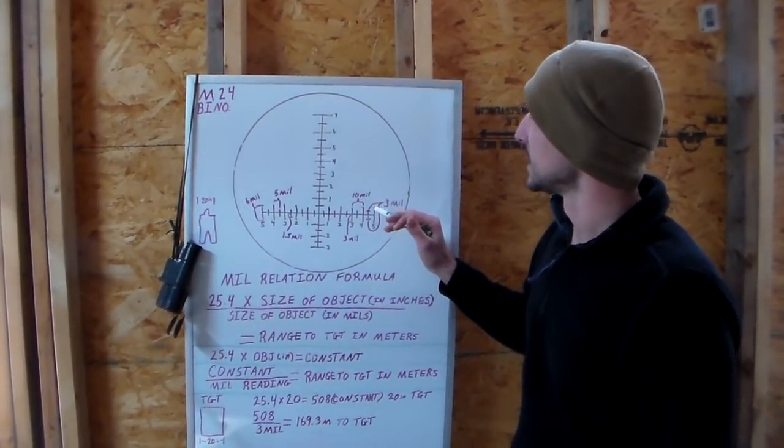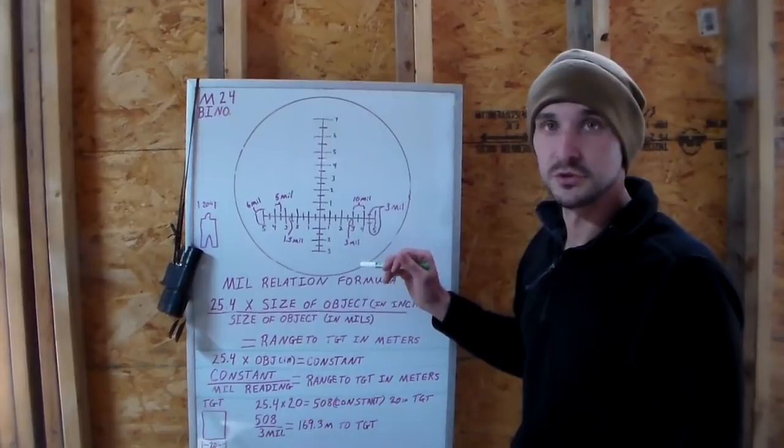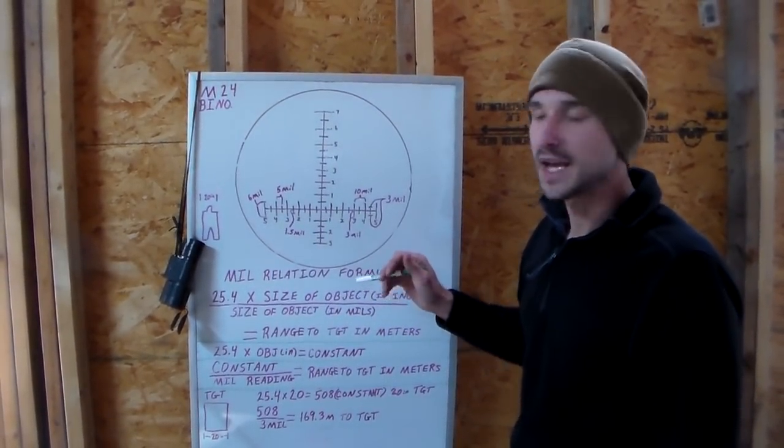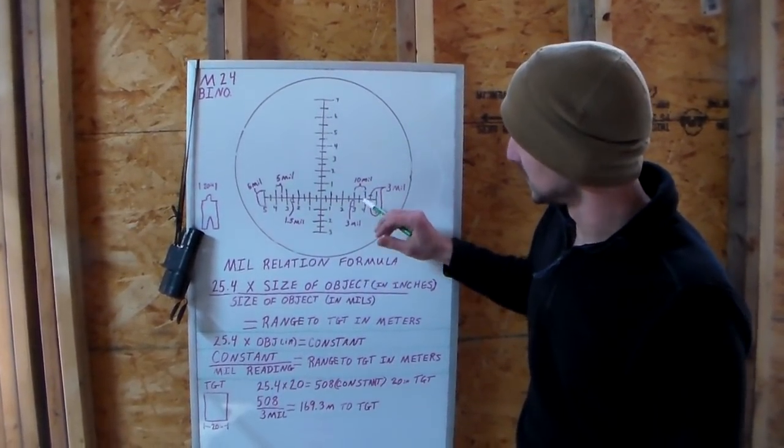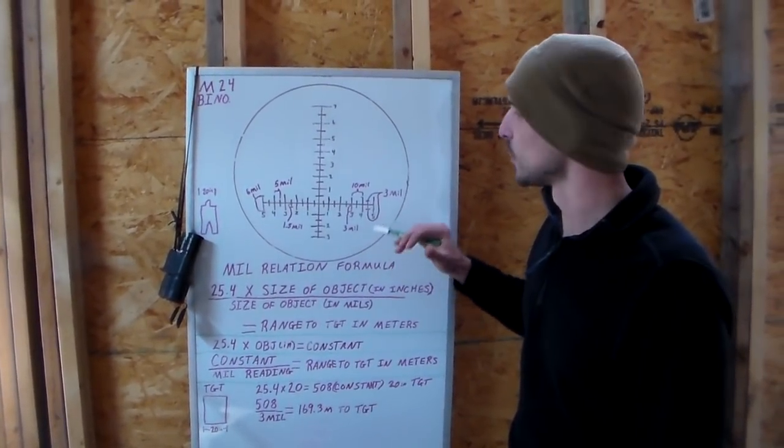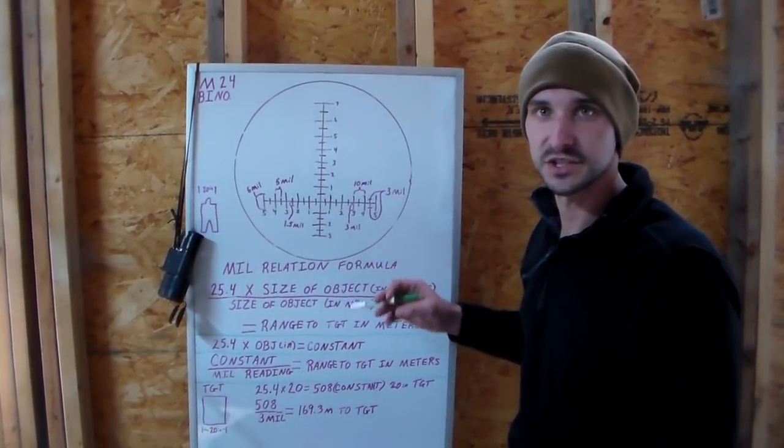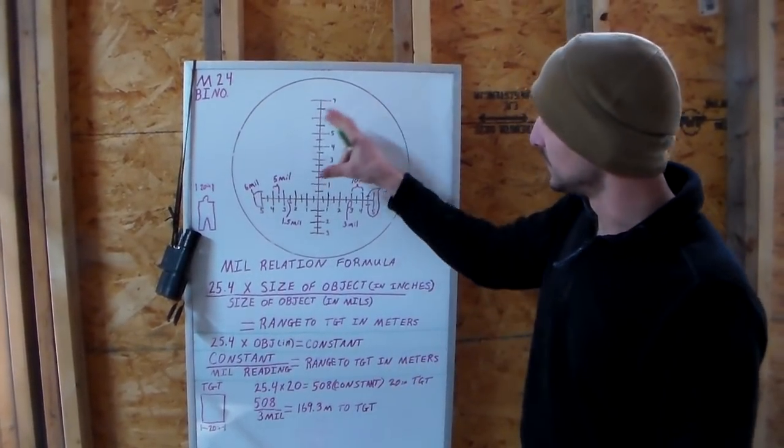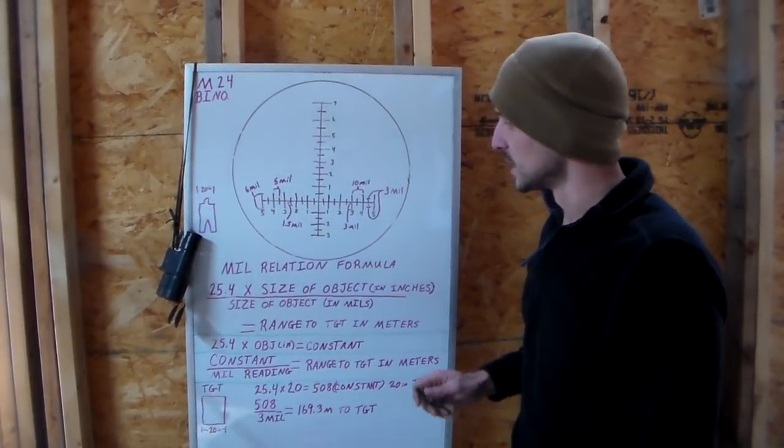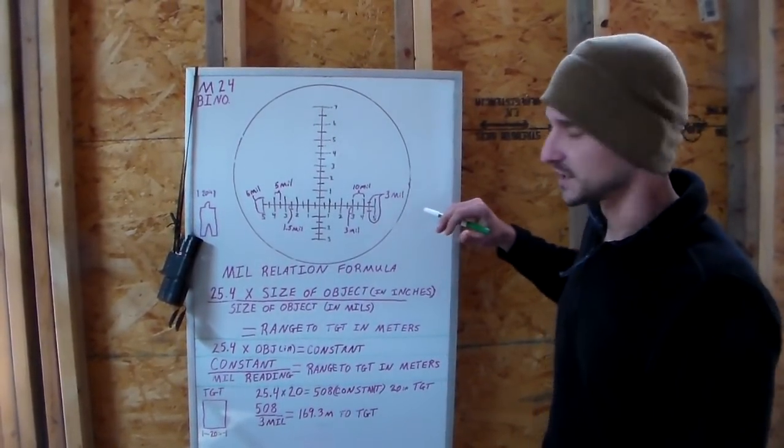There's so many reticles on the market, the best thing for you to do would be to look up your make and model of your scope and your reticle to get all your measurements. Each hash mark, tick mark, subtense, they all stand for different stuff in every single reticle. So the measurements on this reticle may not apply to your reticle.